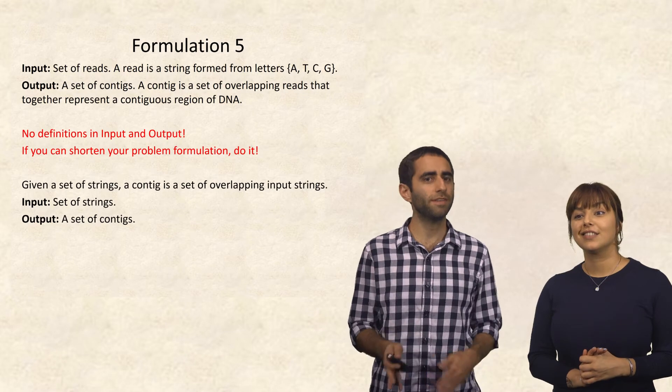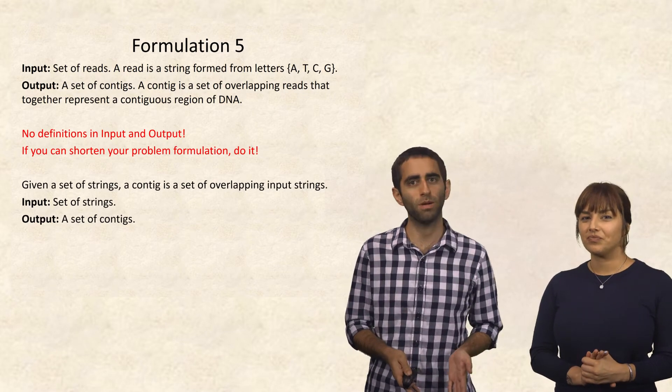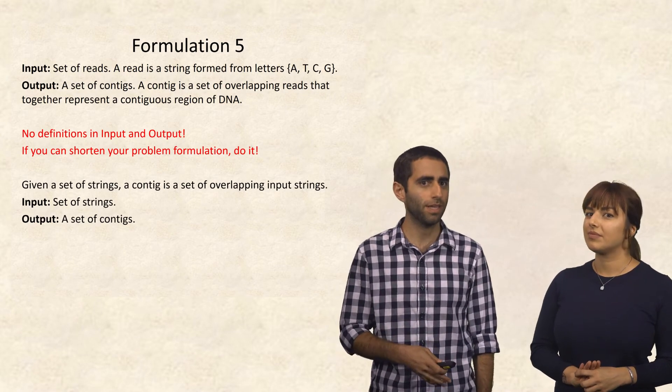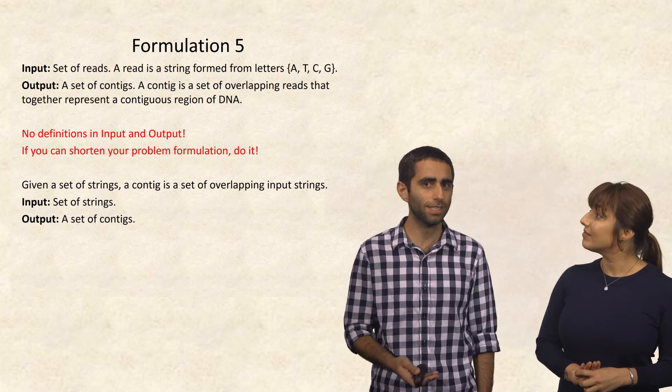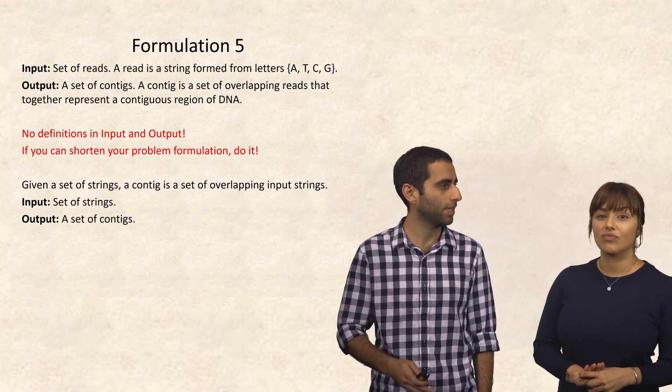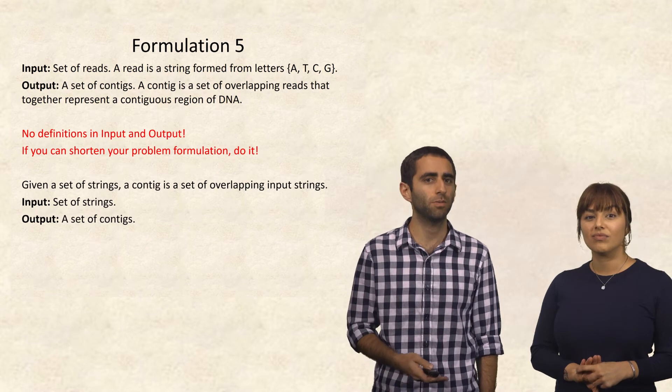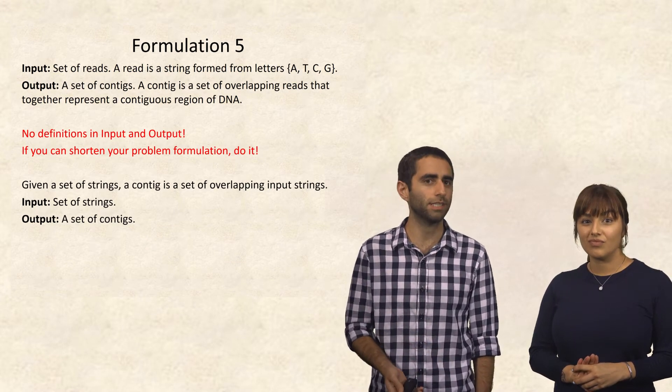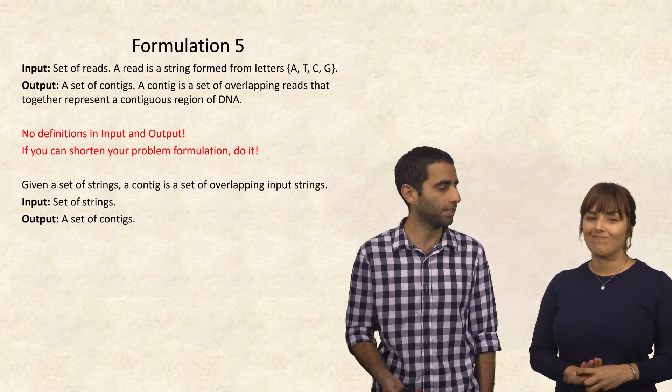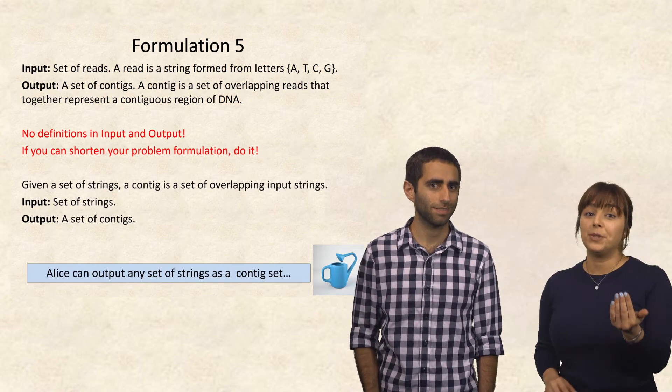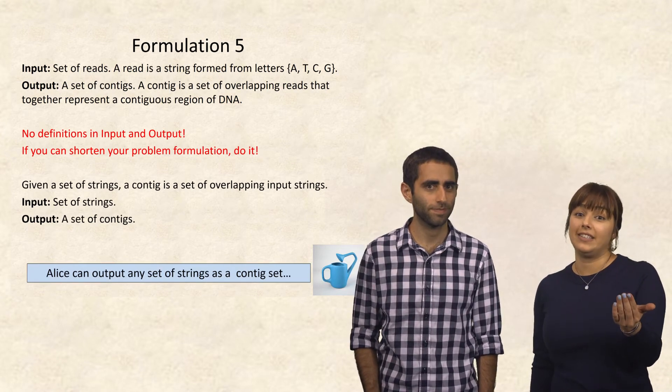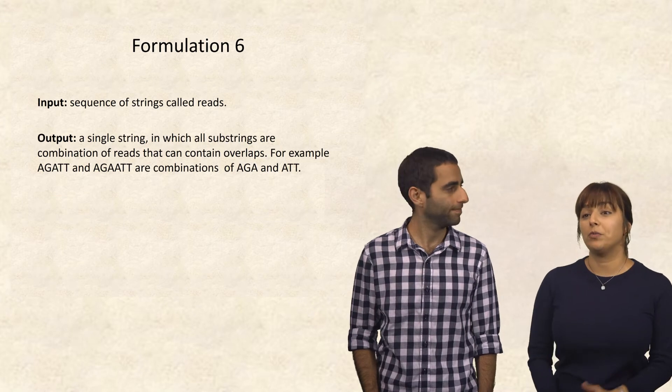Okay, so what if instead I define it before I give you the problem formulation? So my definition I'll say beforehand, given a set of strings, a contig is a set of overlapping input strings. And then my problem formulation would be input is a set of strings, and then output is a set of contigs. Alice can output any set of a string as a contig set, given this formulation.